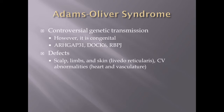Moving on to Adams-Oliver syndrome, which also has cutis aplasia associated with it. The genetics are currently controversial — some say it's autosomal dominant, some say recessive — but the ARHGAP31 gene and related genes are associated with it. It is known to be congenital, not acquired from any virus or vaccine. The defects seen include scalp defects such as cutis aplasia, transverse limb anomalies, skin abnormalities, and cardiovascular defects.